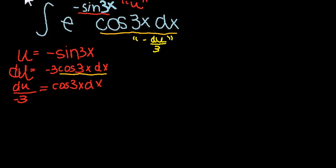Okay, so now we want to go ahead and put everything together. We have e to the u times negative du over 3, and that's what we've substituted so far.